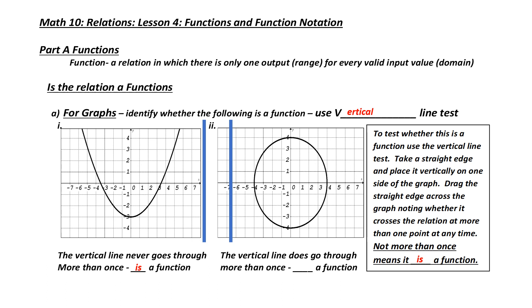Look at my second example. Watch what happens when I drag my vertical line across it. Did you notice that? When I drag it across, at almost all points, there were two areas or points where it crossed my relation. Therefore, there is more than one output for every input. That means that this is not a function.